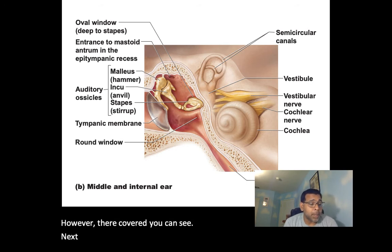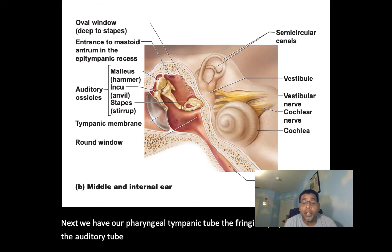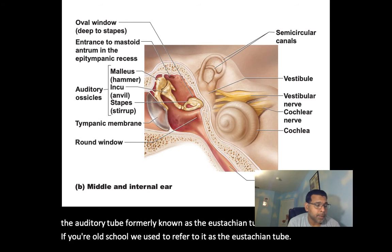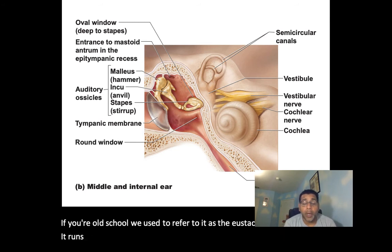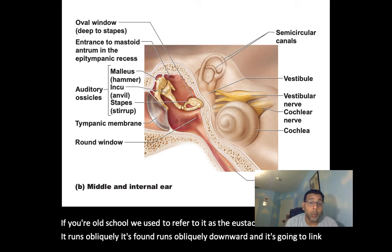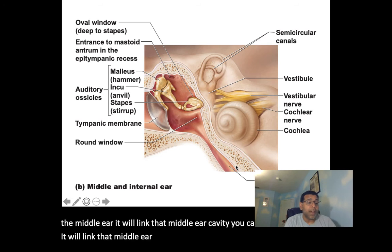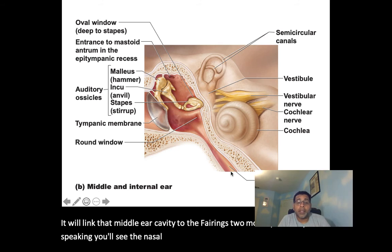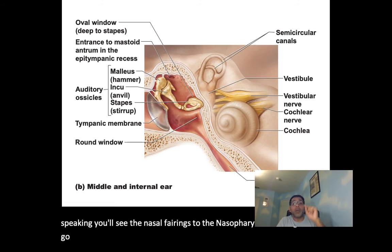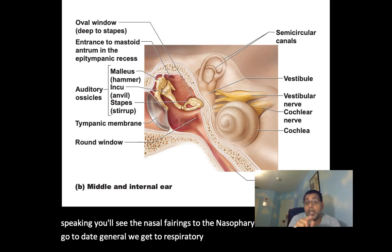Next is the pharyngotympanic tube — also called the auditory tube, formerly known as the Eustachian tube. It runs obliquely downward, linking the middle ear cavity to the pharynx — more specifically to the nasopharynx. When we get to respiratory, we'll see where it opens inside the nasopharynx. It helps equalize pressure, such as when going up and down hills.